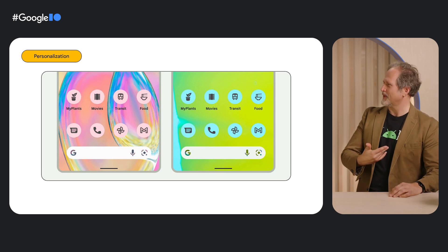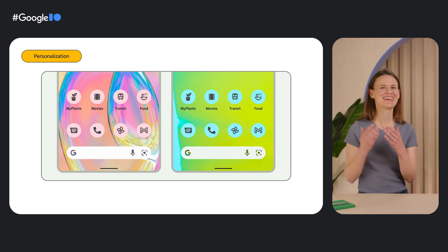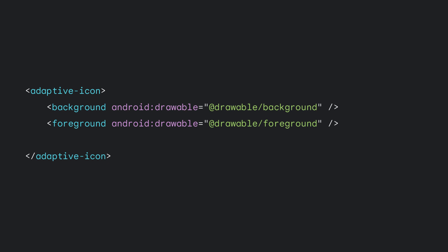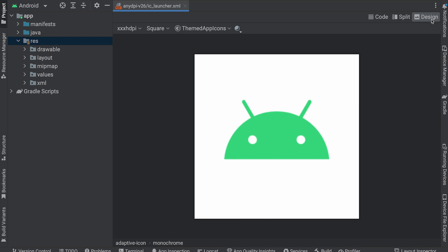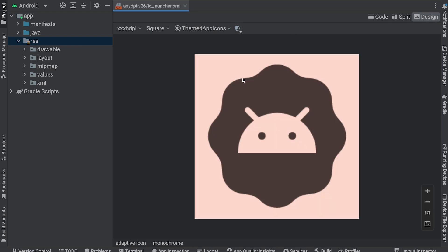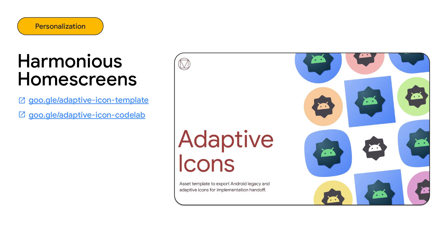How can I get my app icon to do that? You can create a themed app icon. In your existing adaptive icon XML, you'll see background and foreground layers. To add support for themed app icons, add a third monochrome layer that points to a drawable. If your app icon is already simple, your monochrome and foreground drawables can be the same. The new Android Studio tooling in Flamingo and above previews what your themed app icon will look like. Our team has also added new icon design-focused resources, a Figma template and Codelab.